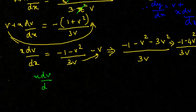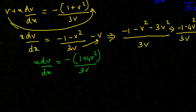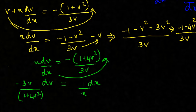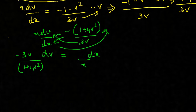So x dv/dx = minus (1 + 4v squared) / 3v. The minus sign was taken outside to help in the LCM calculation. Now separating variables: bringing dx to one side and x down gives dx/x = minus 3v dv / (1 + 4v squared). We have now successfully separated v and x.